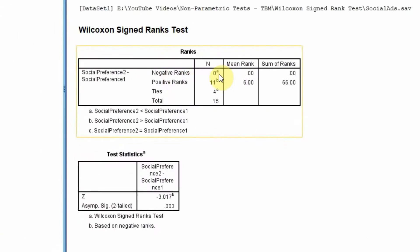Negative ranks 0. What do negative ranks mean? Negative rank means that social preference 2 is less than social preference 1. So after going through this learning through social media seminar, their preference has decreased. Is this the case? Well, no, none of the cases report such situation.